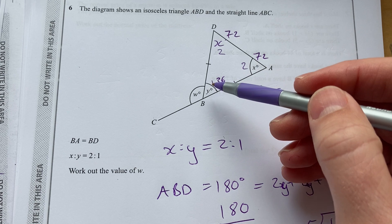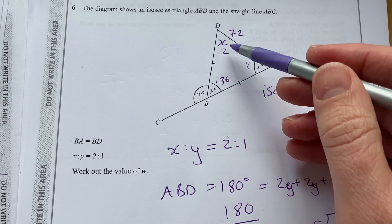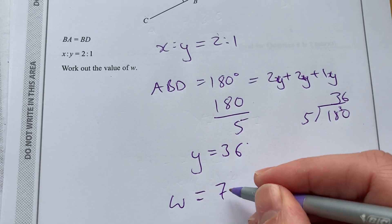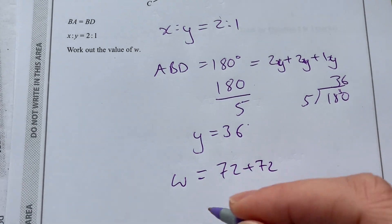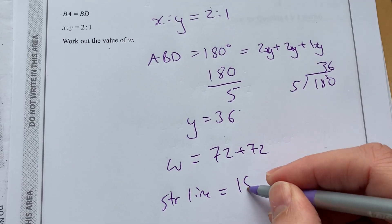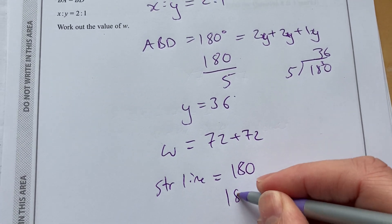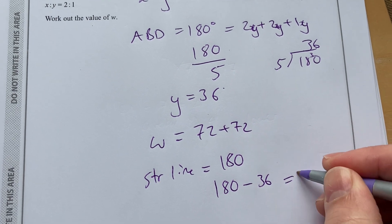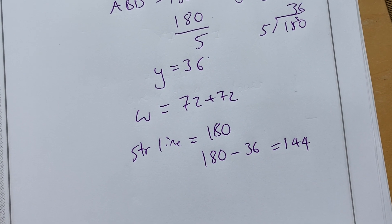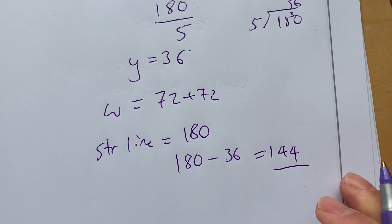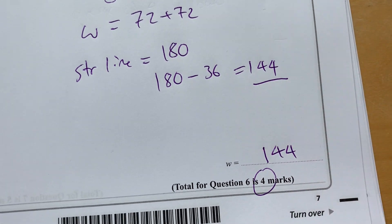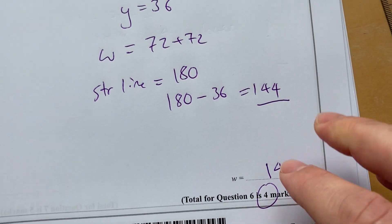If you use the exterior angle of a triangle equal to the sum of the interior opposite, W is then going to equal 72, or you could use angles on a straight line, and they add up to 180. So you could say 180 minus 36 is 144. And that then is your angle W. So W is 144. A few marks in that question. Four marks there.